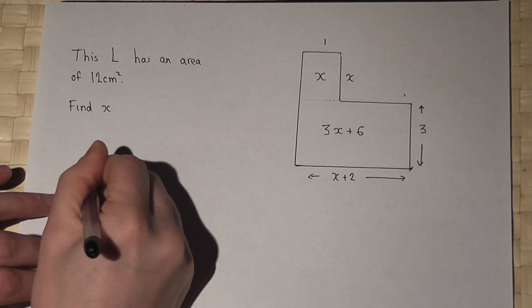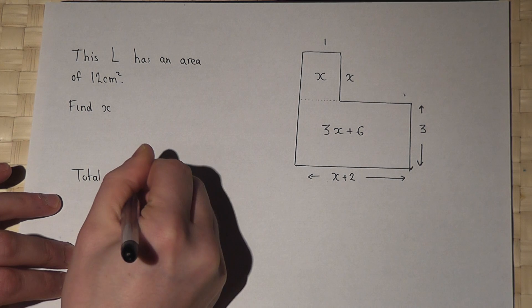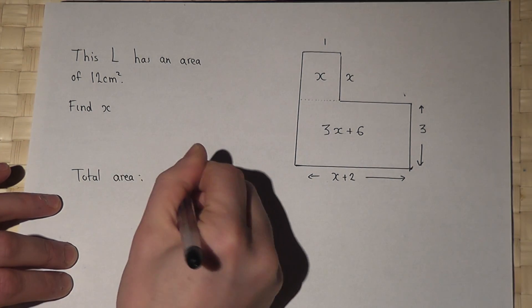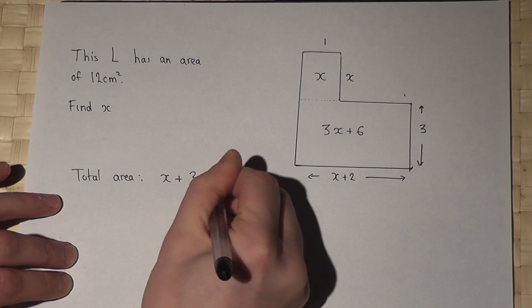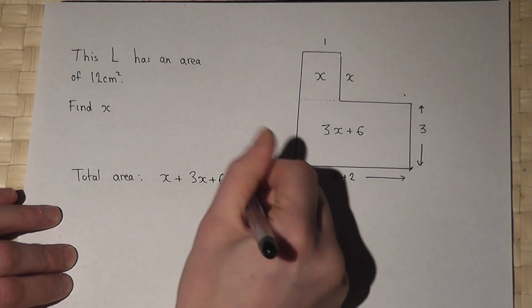So the total area must equal x plus 3x plus 6, and that must equal 12.